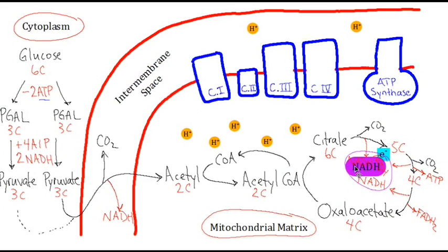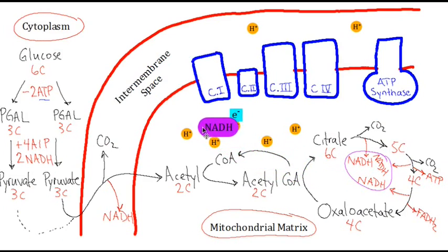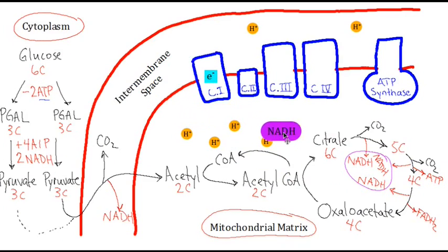These NADH molecules, carrying their electrons, are going to transition to complex I. Once they arrive at complex I, the electrons from NADH are released — this breaks down NADH into NAD+, H+, and allows it to return to the Krebs cycle, the transition reaction, or glycolysis to pick up more electrons. We've been making all of these NADHs — ten of them altogether — just to drop electrons off at this fourth stage, called the electron transport chain.